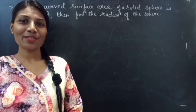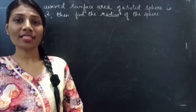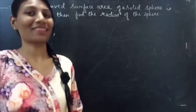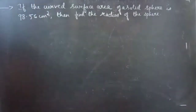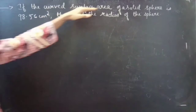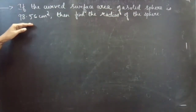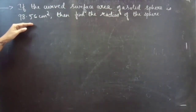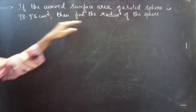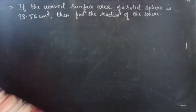Hello everyone, this is Iyakalpina here. In this video we are going to discuss a problem from spheres. Problem: if the curved surface area of a solid sphere is 98.56 cm², then find the radius of the sphere.